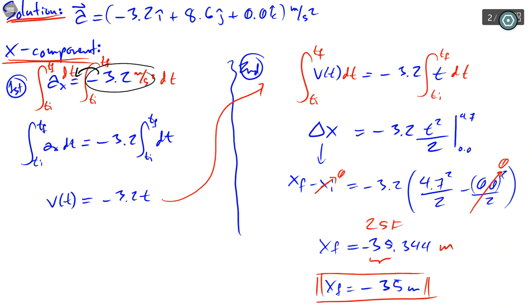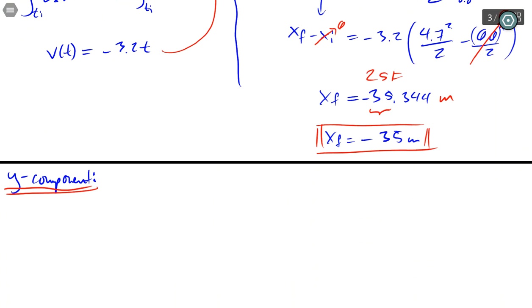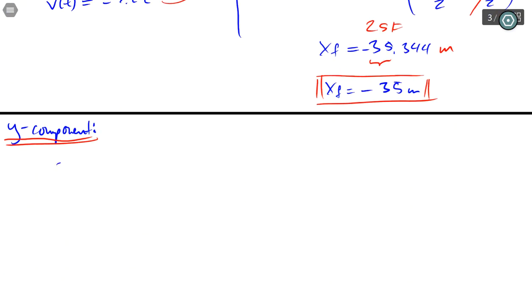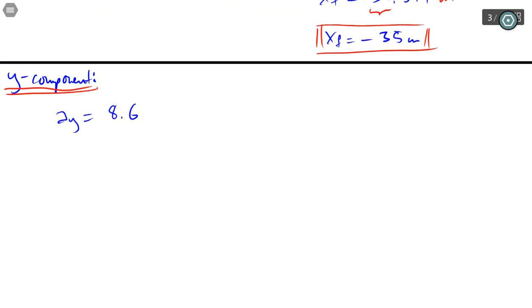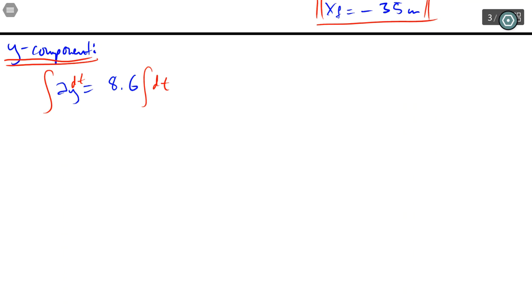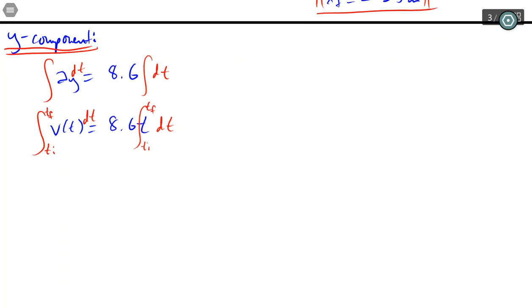That is how you get the x component integrating twice. We're going to do exactly the same process for the y component. Just taking a glimpse of what we're working with, and then the same process. I'm going to go a little bit faster this time. This is going to turn into the function 8.6t.